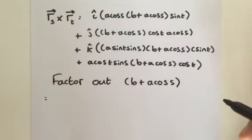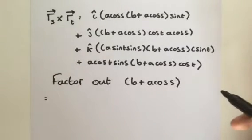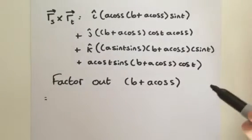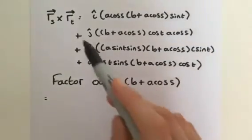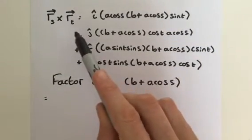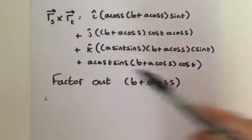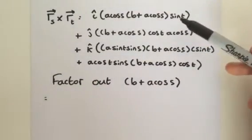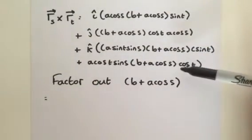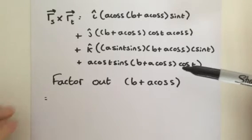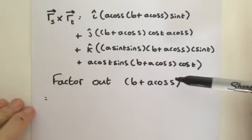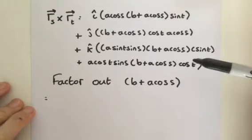Hello. In Part 4, we computed the cross product between our two partial derivatives, and that gave us this mess here. So we are now going to simplify it down.